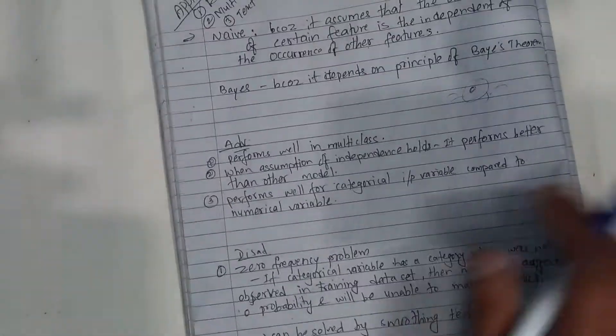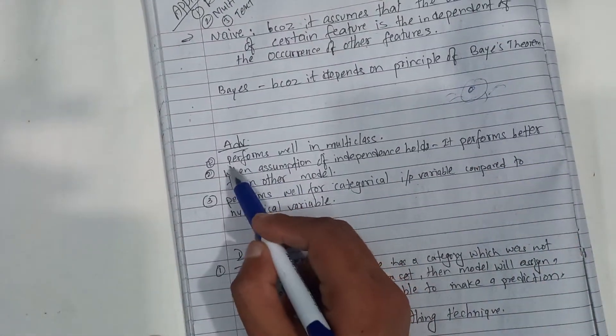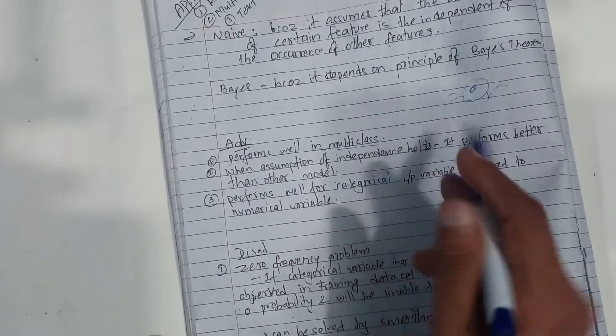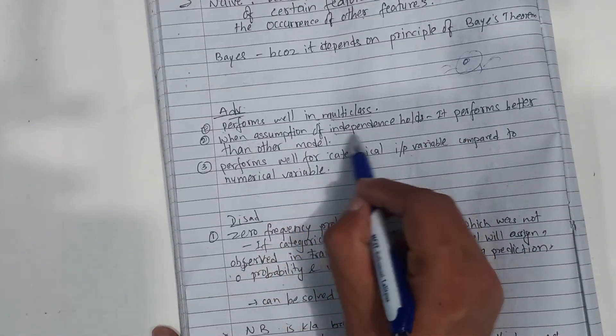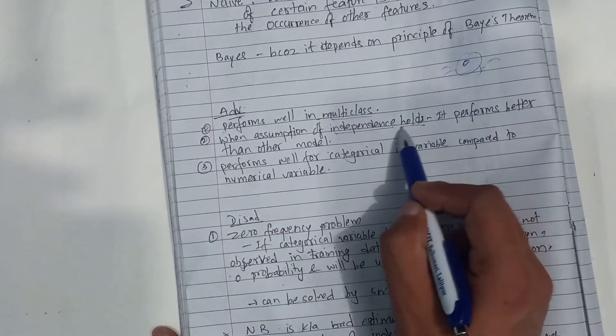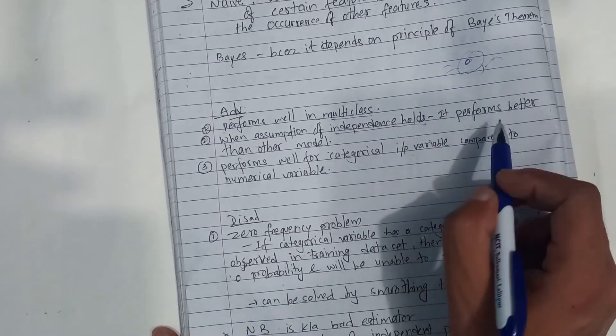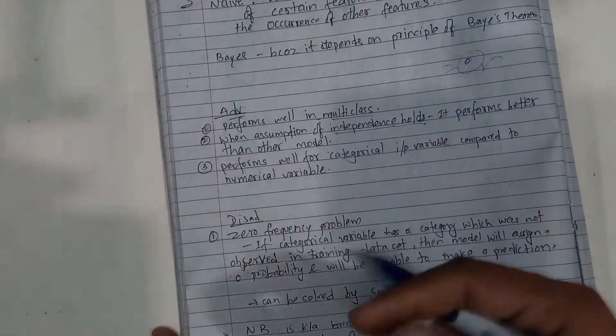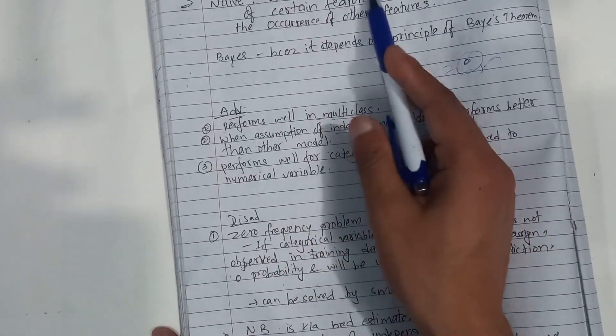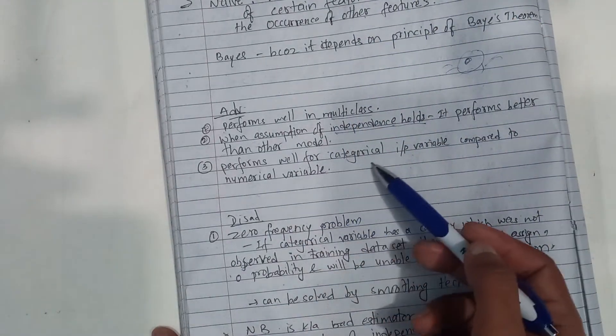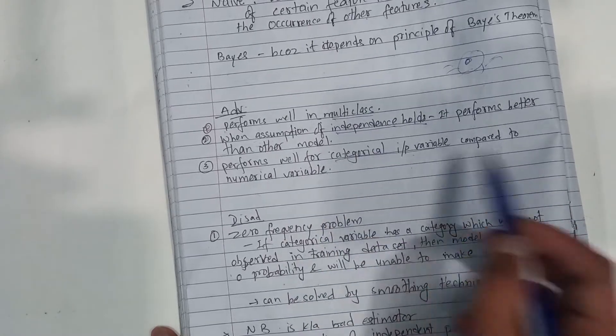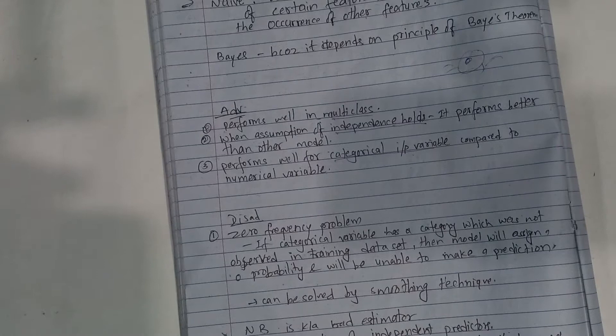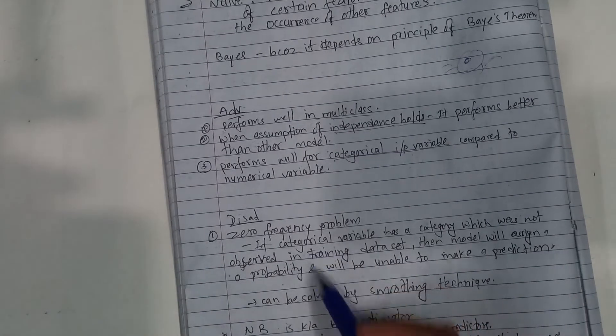The advantages are: performance in multi-class classification is good. The disadvantages are: the assumption of independence is very strong, and performance for categorical input variables is better compared to numerical variables.